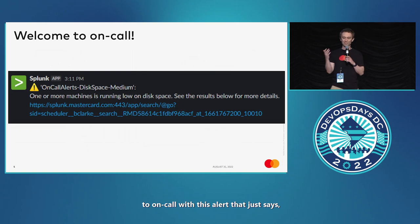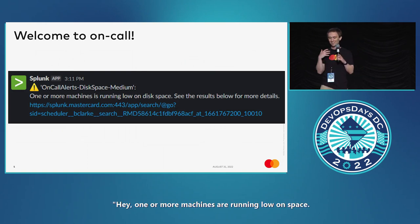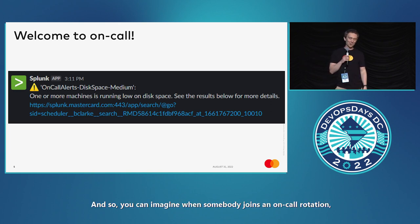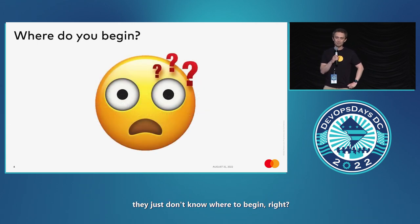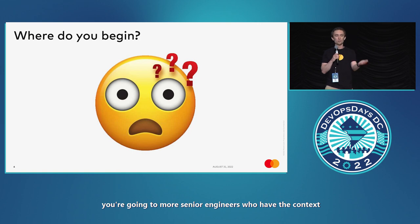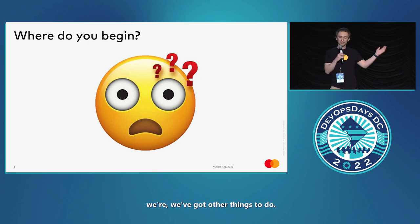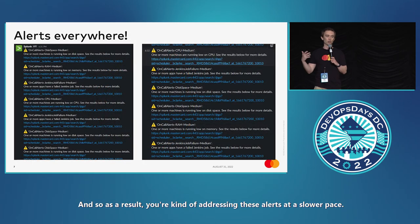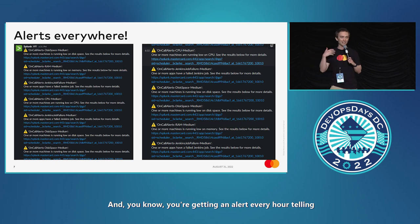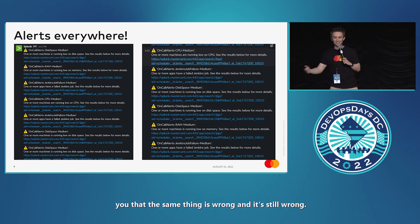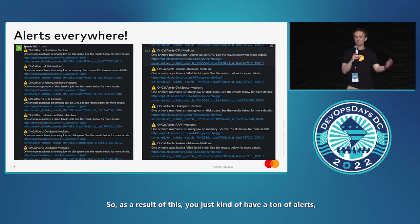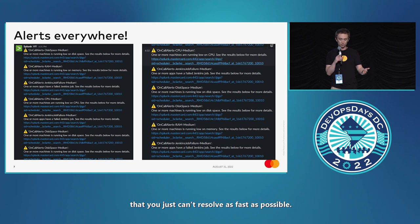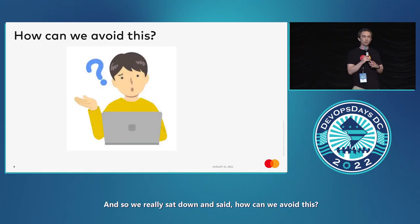As a result, we experienced alert fatigue. Part of the reason was we welcomed people to on-call with an alert that just says 'one or more machines are running low on space — click here and figure it out.' When somebody joins an on-call rotation, they just don't know where to begin. You end up going to more senior engineers who have the context, waiting for them to become available, and you're getting an alert every hour telling you the same thing is still wrong.